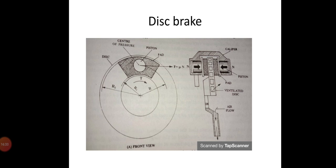The braking torque equals 2 × Mu × N × R, or equivalently 2 × Mu × N × (R1 + R2) / 2. From this formula we can also write that clamping force equals braking torque divided by (2 × Mu × R). These are the clamping force expressions.